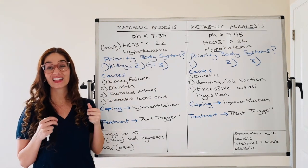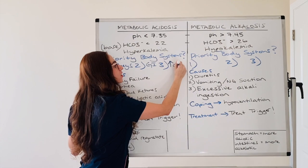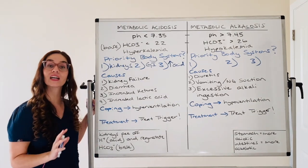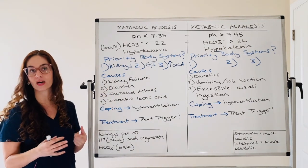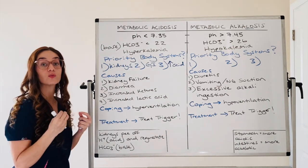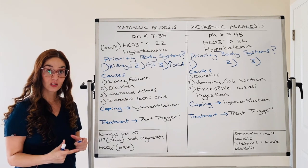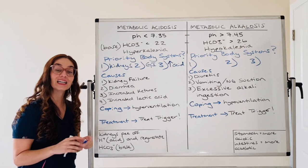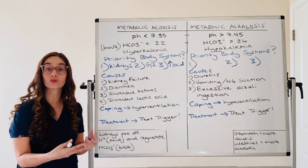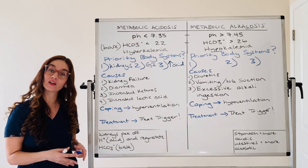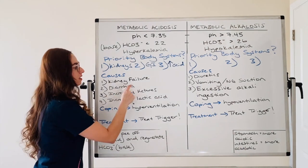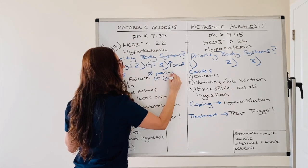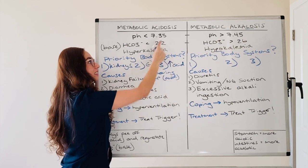Metabolic acidosis — think any disorder that can increase acid in your blood. Ketones are an acid; lactic acid is an acid. Starting with causes: kidney failure. Literally your kidneys have failed, leading to metabolic acidosis because your kidneys normally help pee off acid. In kidney failure, the kidneys are not producing and excreting urine. So you are retaining those toxins, retaining your acid — you are holding onto hydrogen ion, which is an acid, leading to an acidic state.